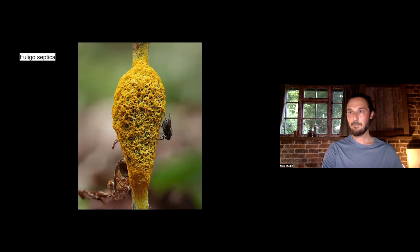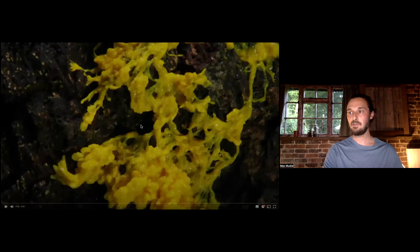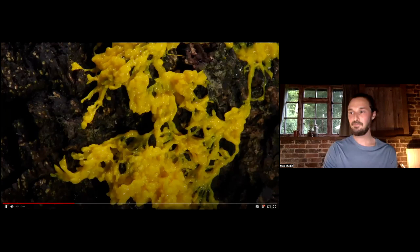Fuligo septica is quite a common one, easy to find. Dog's vomit is the common name, which is pretty gross. No doubt insects will be dispersing these spores, and some insects are found exclusively on myxos. This is a short time lapse of Fuligo septica in the plasmodium stage. This was shot probably every 20-30 seconds until my battery ran out, so it gives you an idea of how quickly it moves.